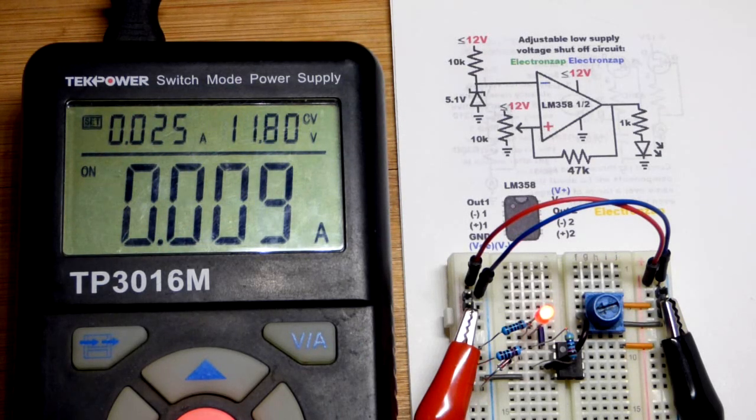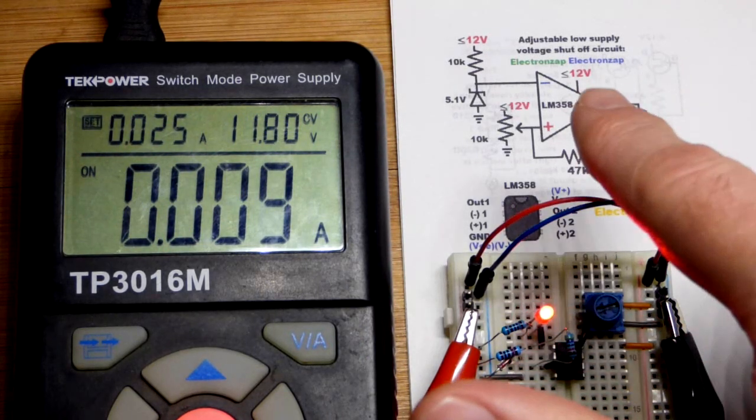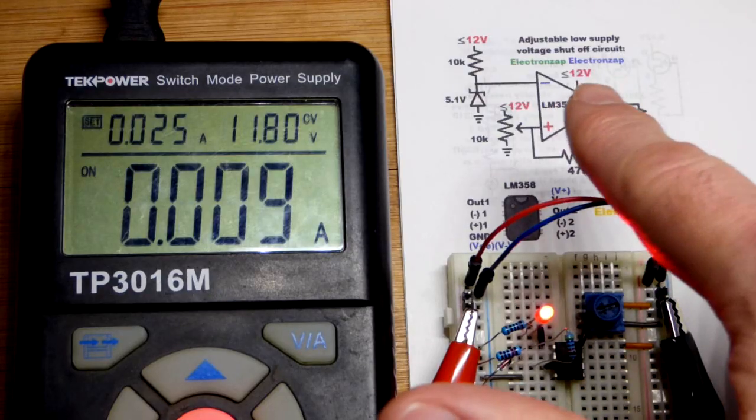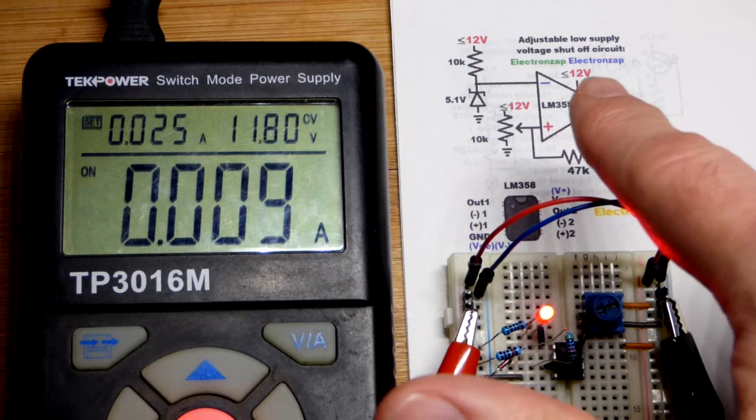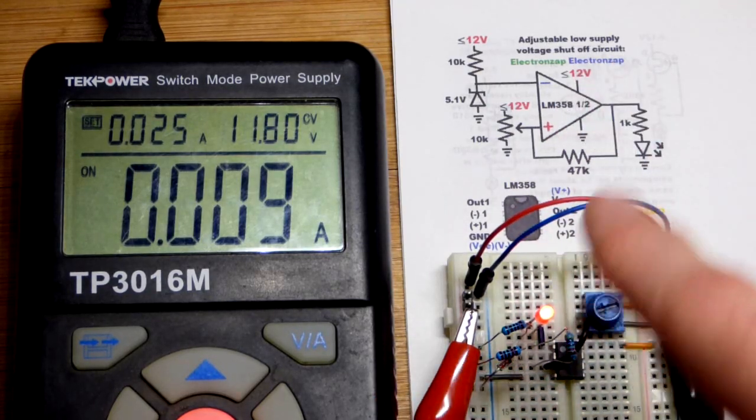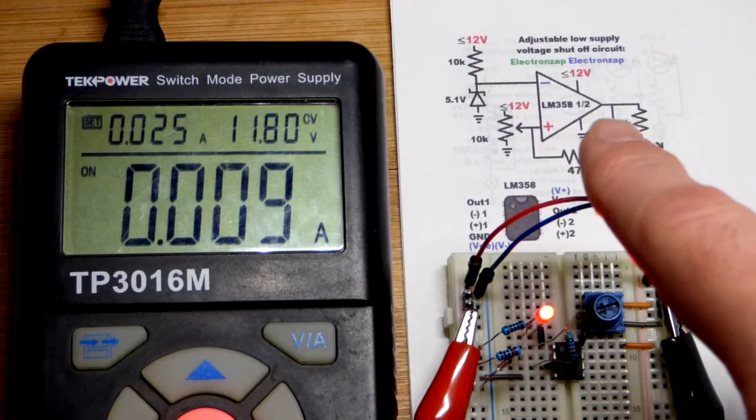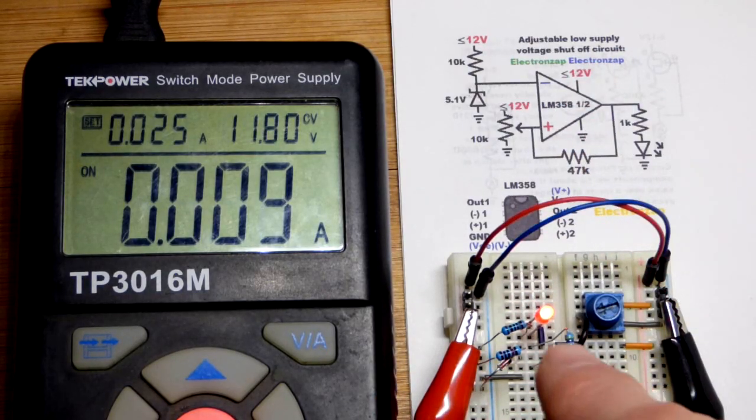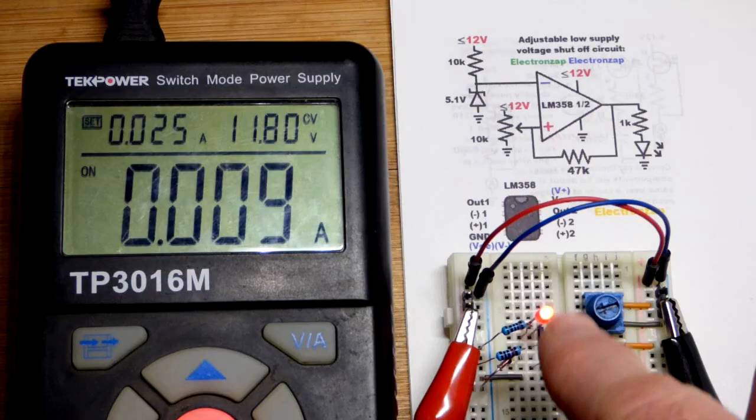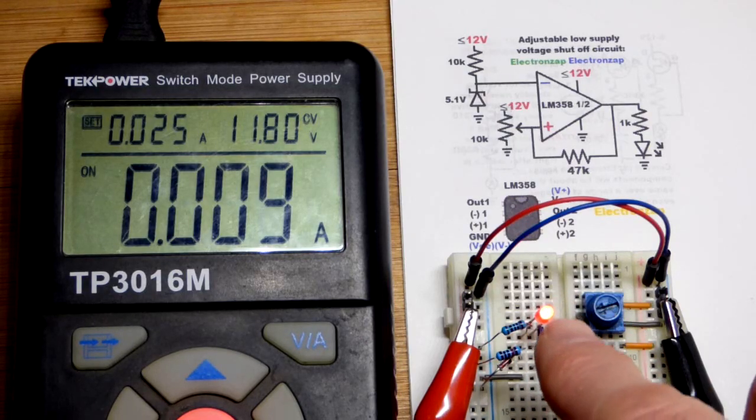Now here we have a circuit I designed to work with 12 volts. We have a battery at 12 volts, and the voltage is going to go down. We don't want to over-discharge the battery, so we're going to turn the load off when the battery voltage gets low enough.